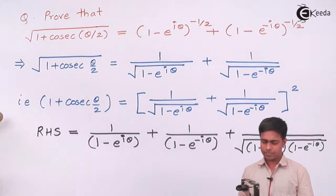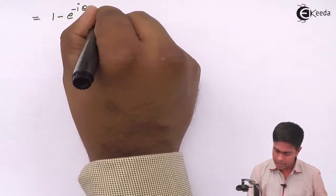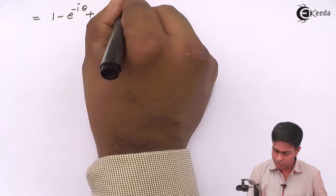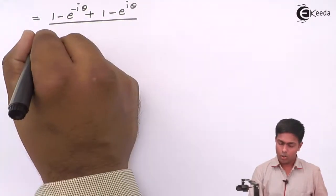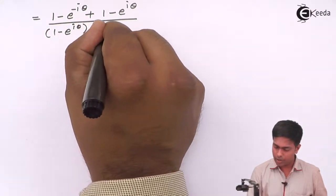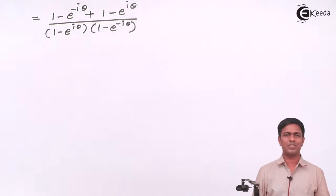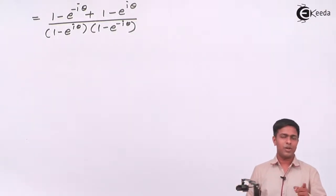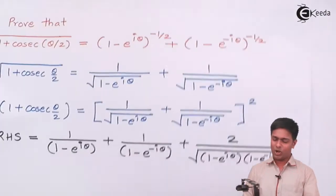Let's take the LCM and cross multiply the first two terms. We get (1 - e^(-iθ) + 1 - e^(iθ)) all over (1 - e^(iθ))(1 - e^(-iθ)). This is just the fifth standard method of adding two fractions.